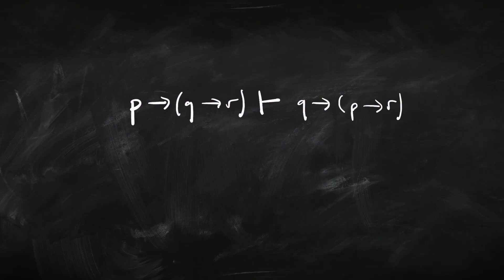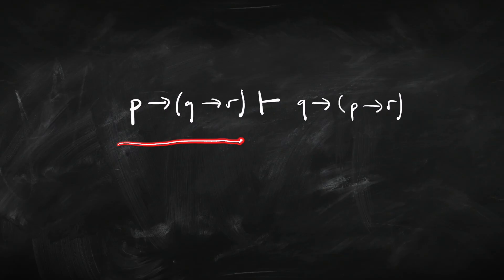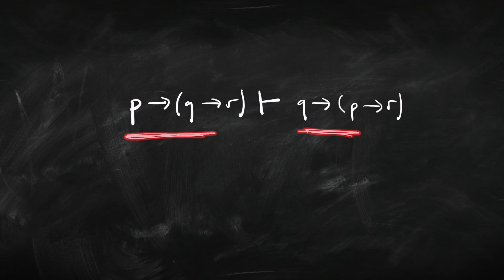So let's start off by looking at some examples. Suppose we want to prove this sentence from this premise. We're going to go from 'if p then if q then r', and we're going to use that to prove 'if q then if p then r'. What's happened here is we've got some embedded conditionals, and we've swapped around the p and the q between the premise and the conclusion. So let's have a look at how we go about proving that.